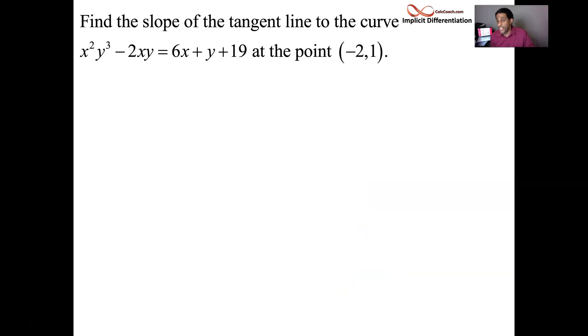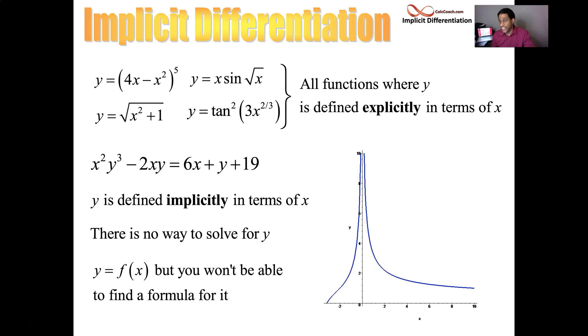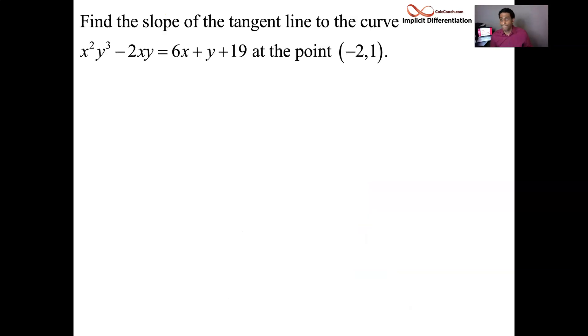So the point that I'm interested in, when x is negative 2, y ends up as 1. Now, back on this graph here, x is negative 2, the y is 1. There's a positive sloping tangent line there. I am going to find the slope of that tangent line.